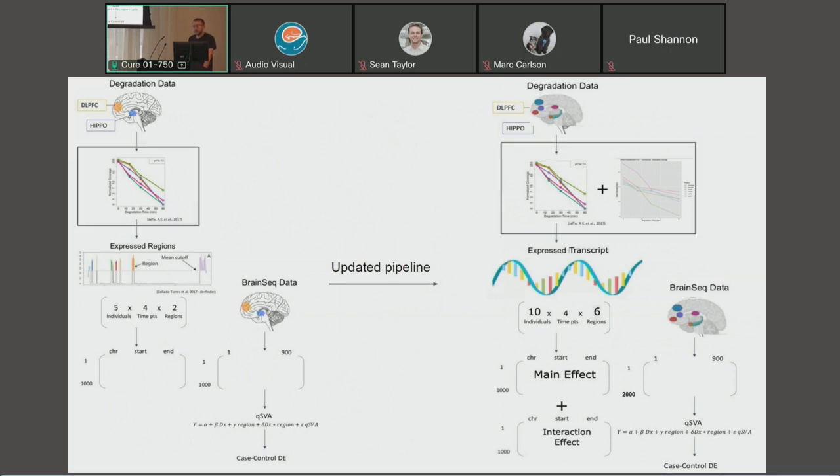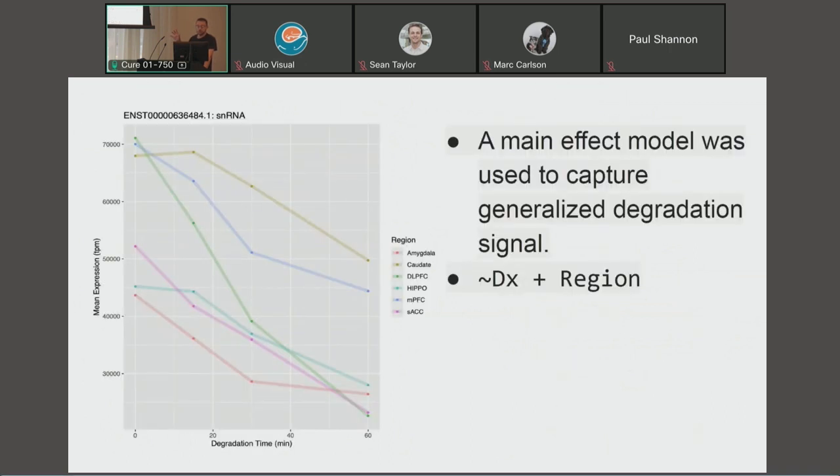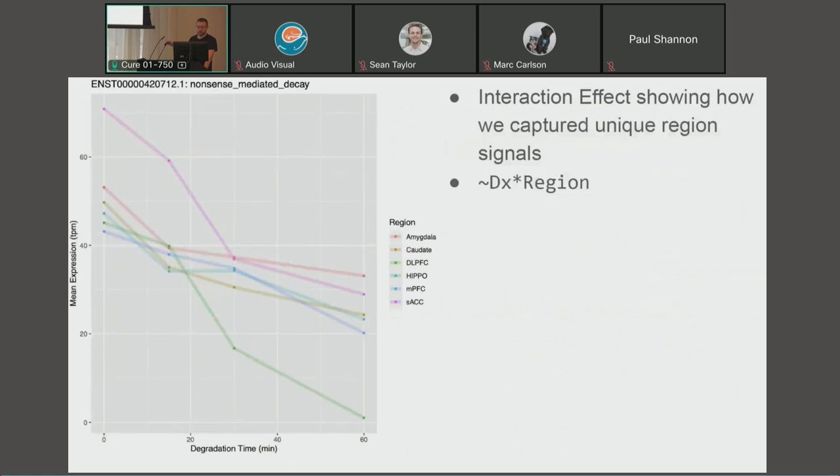I've talked about the expanded brain regions. We added, in addition to a main effect model, an interaction model. So this was just the main effect, degradation over time, controlled by region. We're asking here in this additional model, is there a transcript that degrades in a specific region? And so, as you can see, this one might not have been significant. But because in the DLPFC it degrades so much, we decided to include it in our model. Hopefully, this will make our model much more generalized to specific region signals.